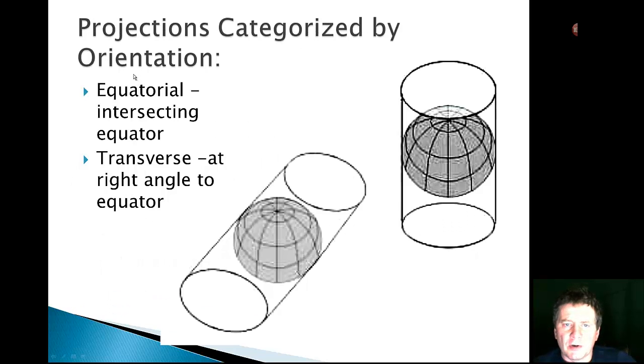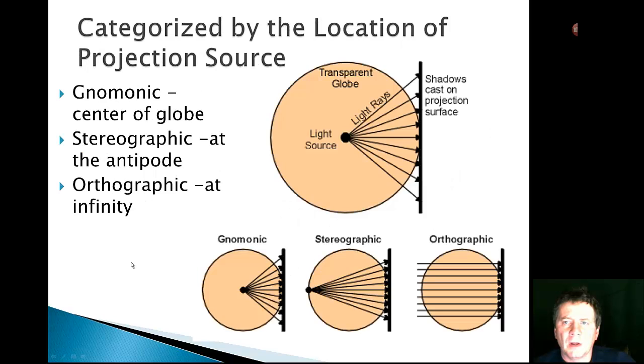So we could do it by orientation so equatorial orientation or a transverse orientation. And by the location of the light source. So here you can think of it like the globe is transparent and these light rays are projecting out and you can see these are equal angles so they should be equal distance on the map except they're not. They stretch out. So these would be stretched locations here.